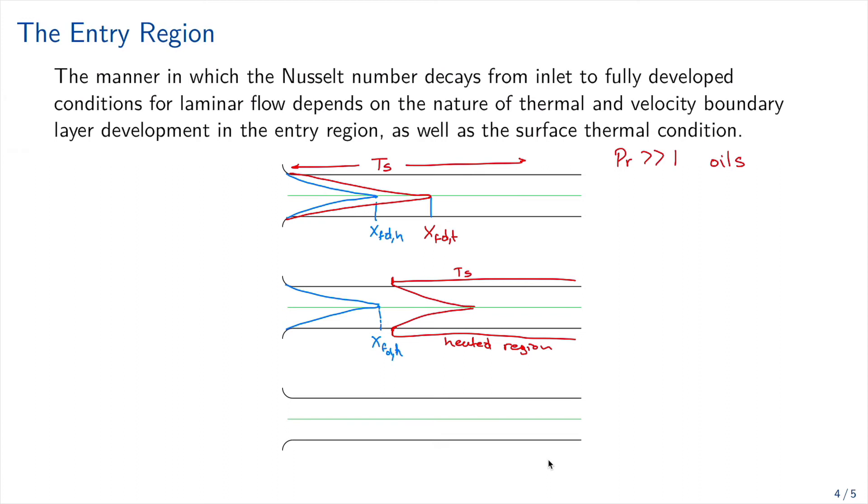So the distance is going to be much larger. So in these two situations, we are going to call thermal entry. So thermal entry means that the distance for fully developed velocity and temperature are different.